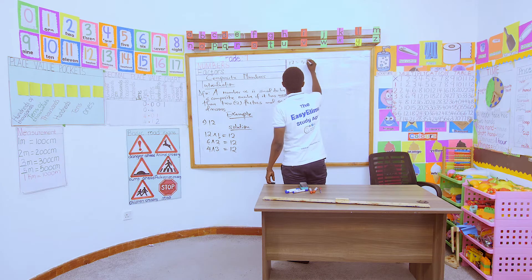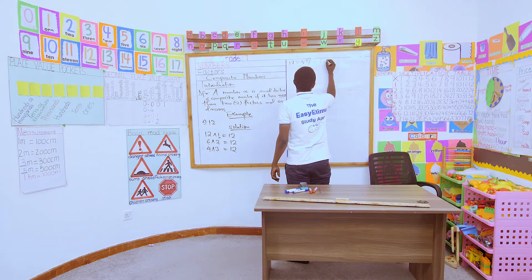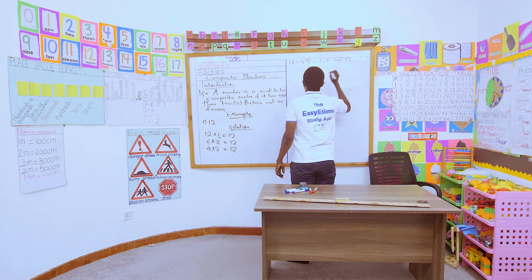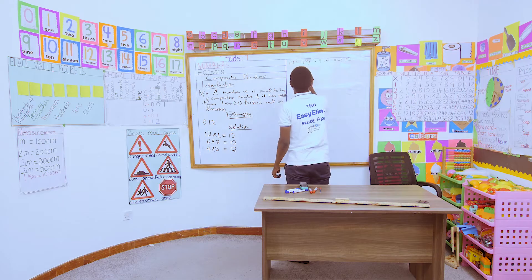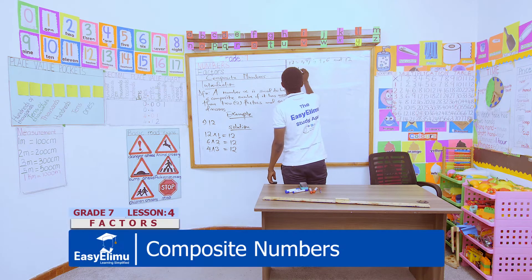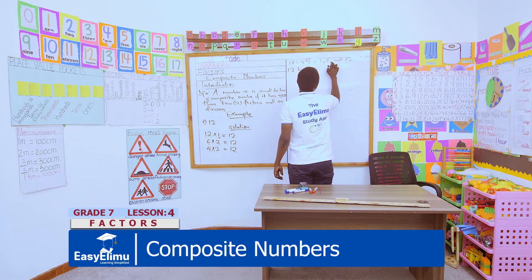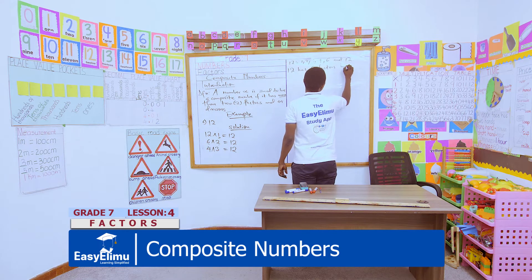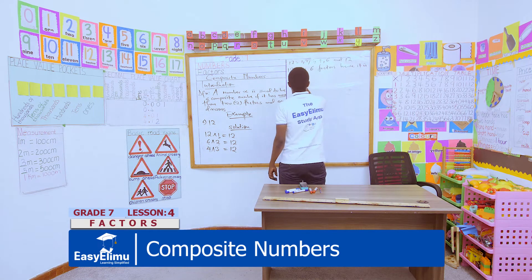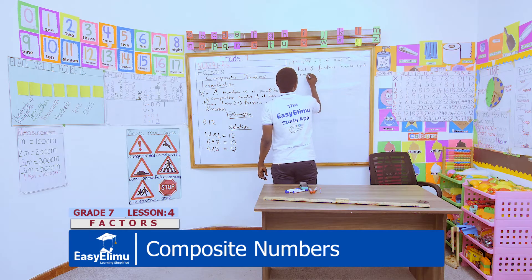The factors of 12 are: 1, 2, 3, 4, 6, and 12 itself. So how many factors do we have? 12 has 6 factors. Hence it is a composite number.